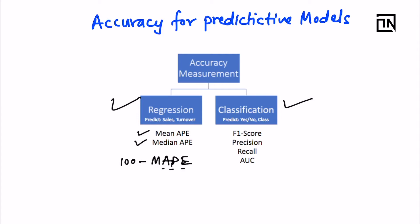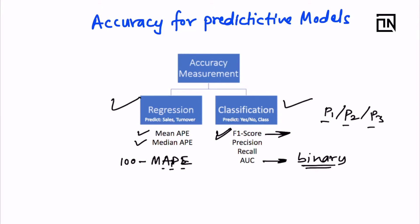For classification, the one-point answer for accuracy is F1 score. The moment you say F1 score, I'll understand that yes, you have explained this to a client or at least practically implemented it. F1 score is preferred over AUC because AUC is good for binary cases. When you have multi-class classification — like classifying ticket priority as P1, P2, or P3 — AUC requires extra one-versus-all calculations. So F1 score is the preferred metric.